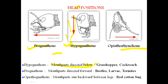Prognathus means the long axis of the head is horizontal and in line with the long axis of the body, with the mouth parts directed forward. Insects that fall under this type include beetles, larvae, termites (including the soldier caste of termites), and stick insects.